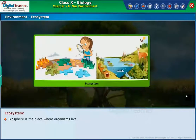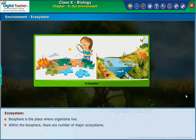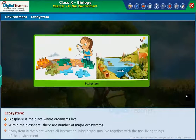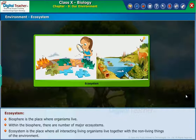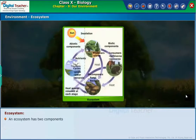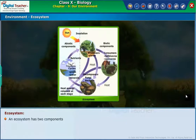Biosphere is the place where organisms live. Within the biosphere, there are a number of major ecosystems. An ecosystem is the place where all interacting living organisms live together with the non-living things of the environment. An ecosystem has two components: abiotic components and biotic components.